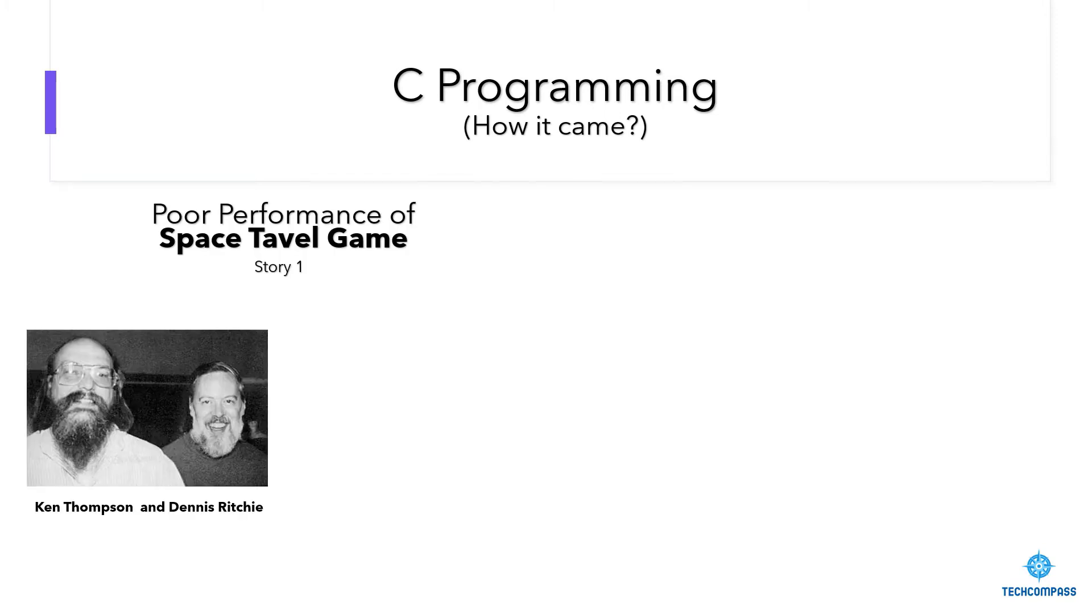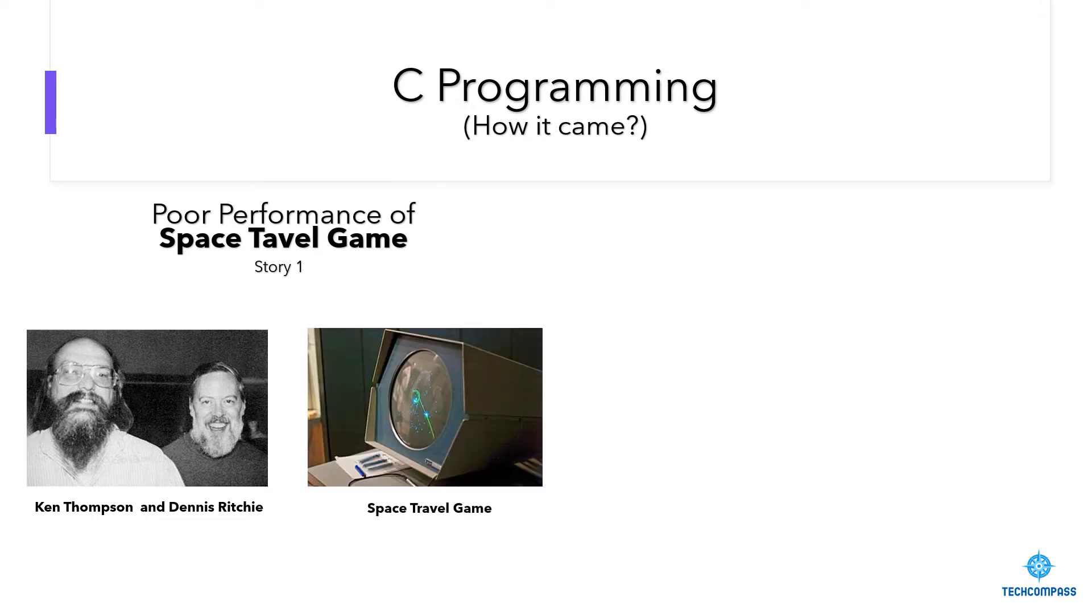Poor performance of space travel game. When Ken Thompson and Dennis Ritchie were working at AT&T Bell Labs, they both were playing a game named space travel on mainframe system. In the game, you have a spaceship and there are multiple asteroids coming towards the spaceship. If the spaceship gets destroyed by asteroids, then the game would be over. The game is to escape from the asteroids and save the spaceship. While they were playing, they were not able to control the spaceship and it was frequently getting destroyed by the asteroids.